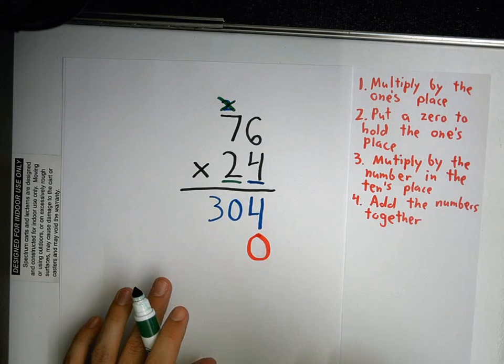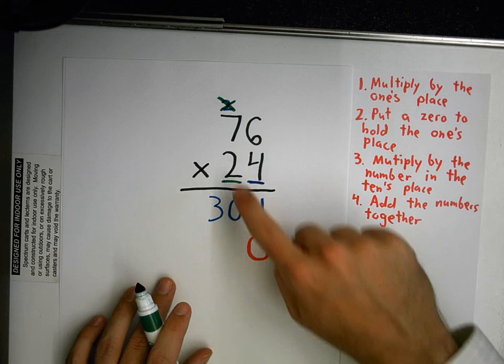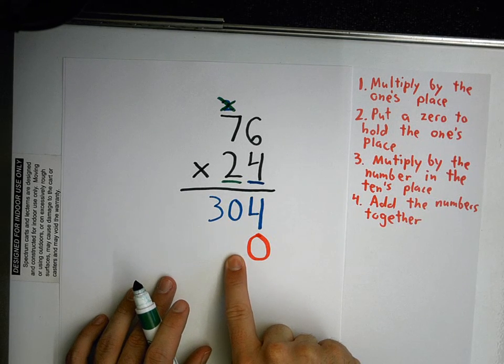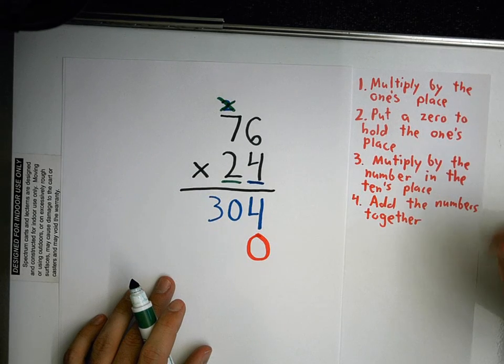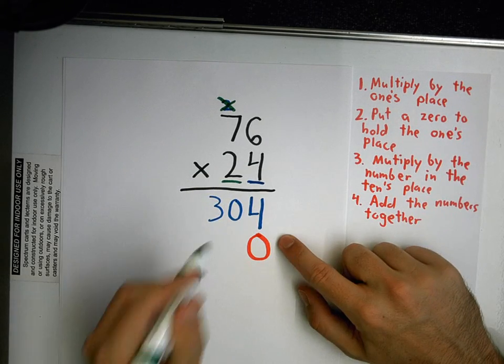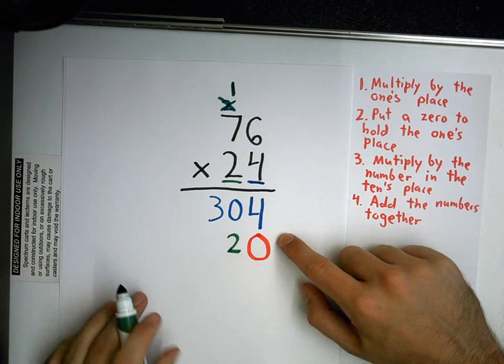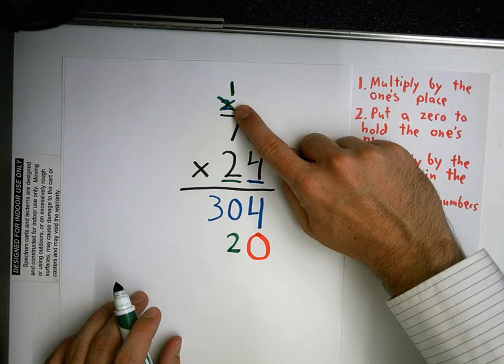Now I have to multiply by 2. 2 groups of 10. And since I'm multiplying by tens, I'm going to start writing my answer underneath the tens place. 2 times 6 is what? What's 2 times 6? I'm going to put a 2 down here. And my 1 is going to come up here. See, I'm only going to look at my 1 up here now. I don't need my 2 up here anymore.